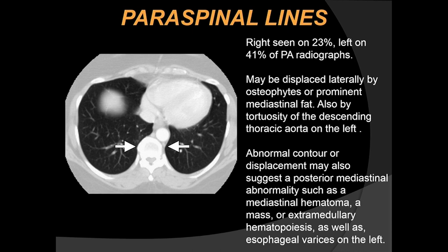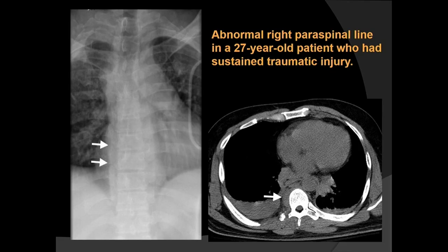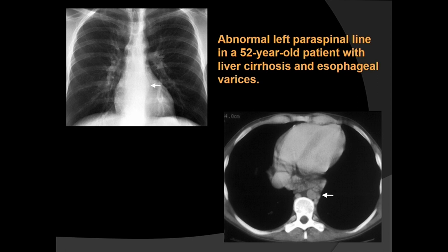If there is any abnormal contour or displacement of the paraspinal lines, this suggests posterior mediastinal abnormality requiring further CT investigation. Here we see an abnormal displaced right paraspinal line in a 27-year-old patient with traumatic injury — a fracture of the transverse processes causing a paraspinal hematoma displacing the right paraspinal line. In another case, the left paraspinal line is bulging outward in a cirrhotic patient with esophageal varices displacing it.